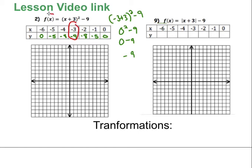When I look at the actual problem and I see x plus 3 squared minus 9, I take the opposite of the sign. If it's a positive 3 inside, that becomes a negative 3 for the vertex. So I can look at the equation and see the vertex is at negative 3, negative 9. If I go to negative 3, negative 9, that's my vertex.